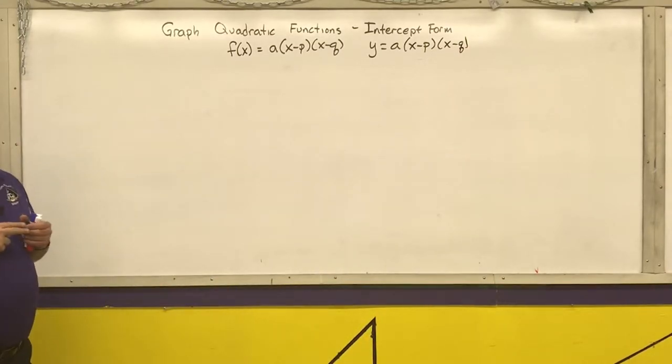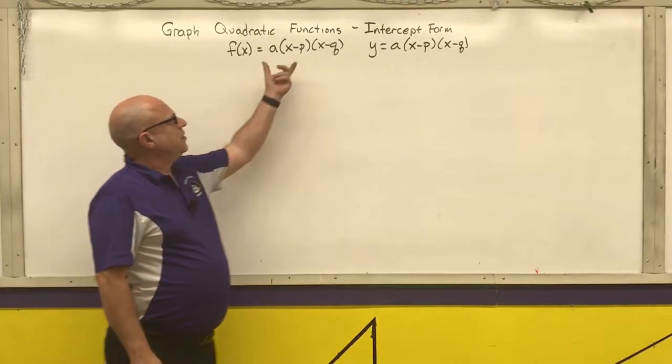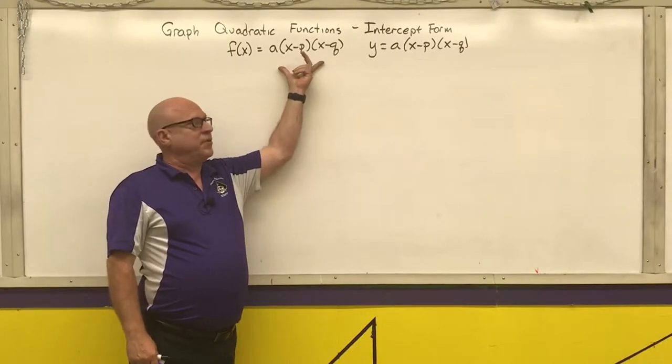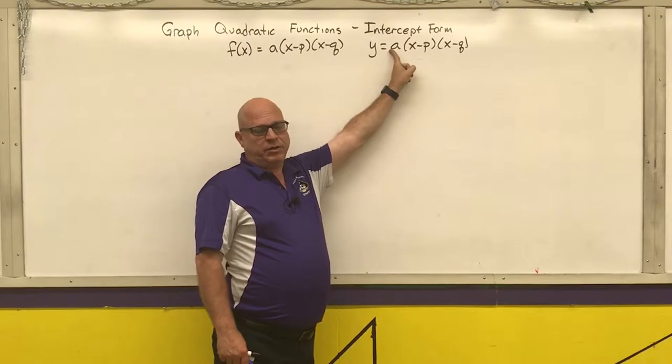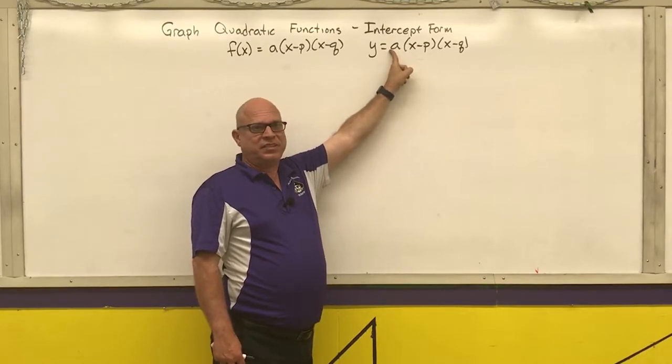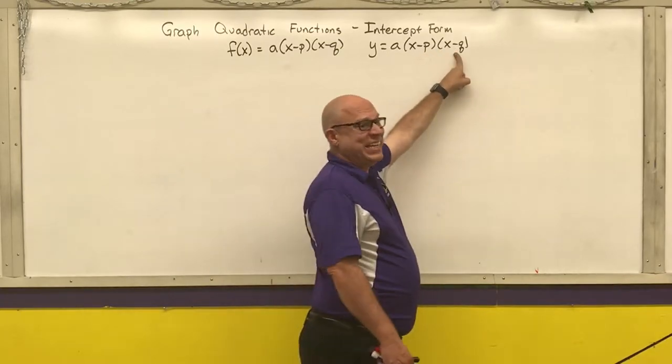We learned when I taught you how to play around with quadratics that we learned about the zero product property. If y is zero, that means a has to be zero, which it isn't, it can't be. That's one of the restrictions on a, it cannot be zero. Or this is zero, or that is zero.